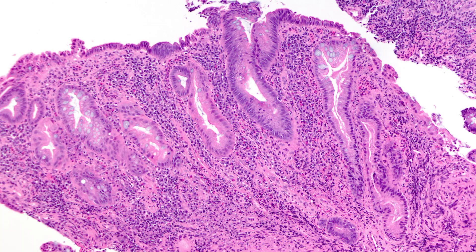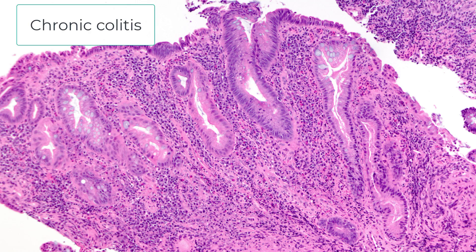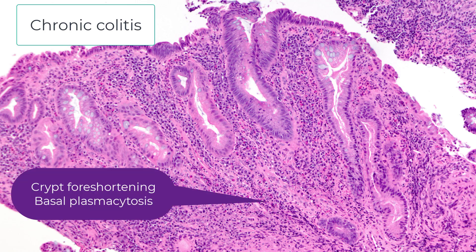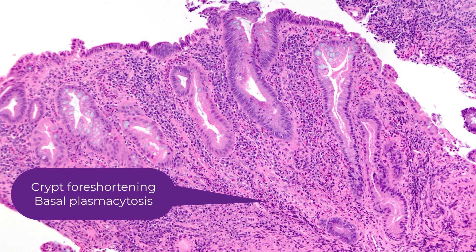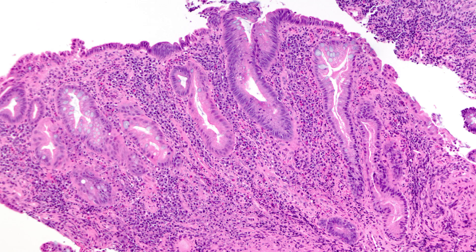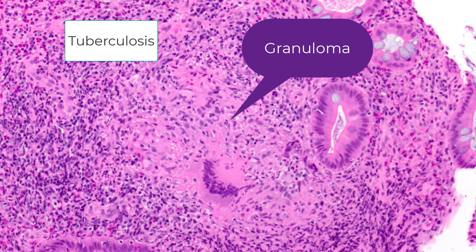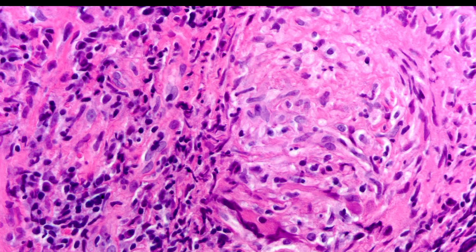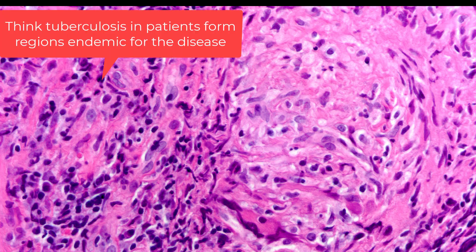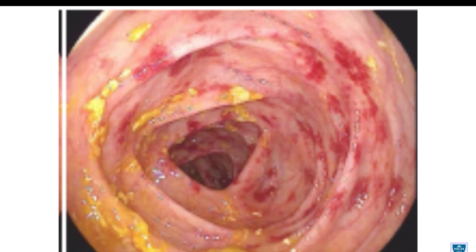If you live in the subcontinent — India, Pakistan, Bangladesh — you'll be familiar with this. It does look like chronic colitis: there's foreshortening, there's basal plasmacytosis. But as any pathologist working there will tell you, before you make a diagnosis of inflammatory bowel disease in a patient from the subcontinent, think tuberculosis. Here's a granuloma, here's a Langhans-type giant cell. Remember biopsies may not capture those granulomas, and here's another well-formed granuloma. Think tuberculosis particularly in patients from high-incidence regions.